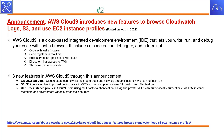AWS Cloud9 introduces new features to browse CloudWatch logs, S3, and use EC2 instance profiles. Cloud9 is a cloud-based IDE under developer tools. Users can now list their log groups and view log streams instantly without leaving their IDE. S3 integration has improved performance in VPCs and now supports a new upload current file feature. Cloud9 users using MFA and private VPCs can automatically authenticate via EC2 instance metadata and environment variable credential sources.